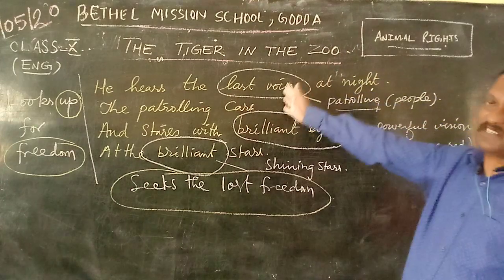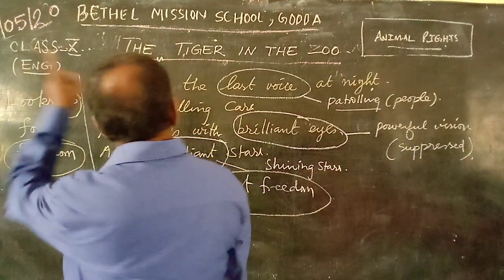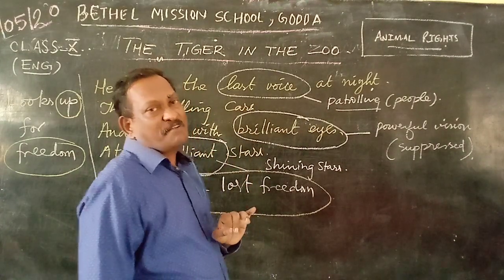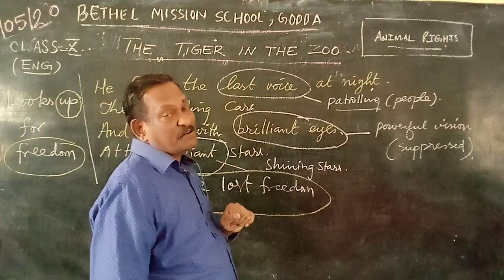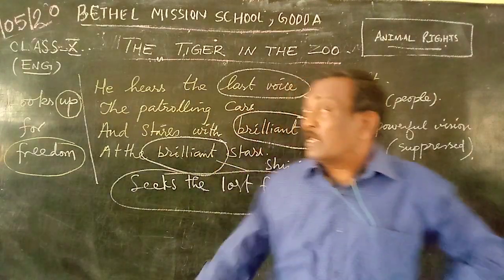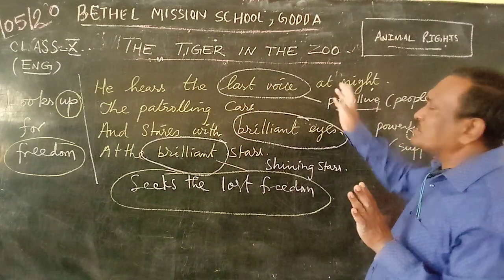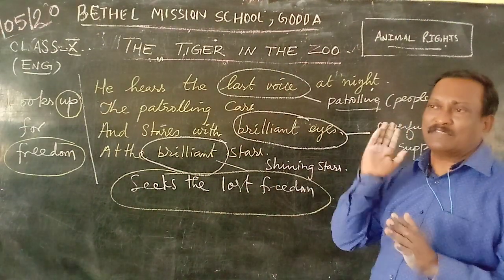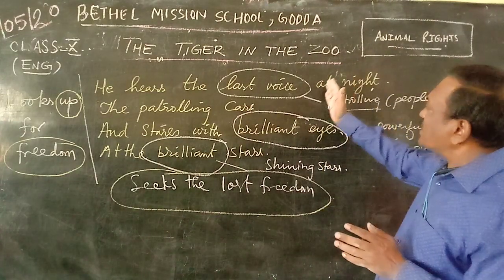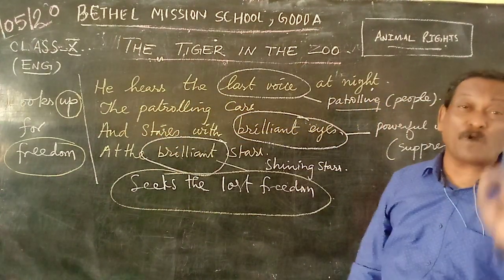Finally, we are at the last stanza of the poem. In this stanza, the poem sums up the entire theme. 'He hears the last voice at hand.' Who is 'he'? Once again, it is the tiger — and remember, whenever you find the word 'he' in this poem, the tiger is personified, treated as a human being. He hears the last voice. What does the poet mean by the last voice? It is the voice of the zookeepers, the wardens, the guards, the patrolling officials who come for a final check-up. Before they close the zoo, they ensure every animal is safe in its cage, properly fed, and in the right condition.